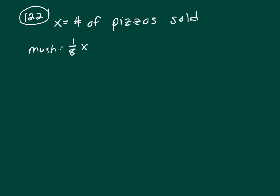And one-third of the remaining pizzas—well, if there's 1/8 X mushroom pizzas, that means the remaining pizzas would be 7/8 X, because one minus one-eighth is seven-eighths. And one-third of the remaining pizzas are pepperoni.